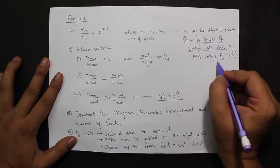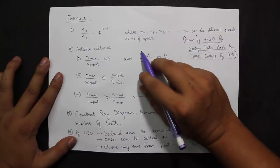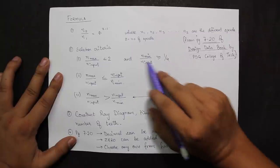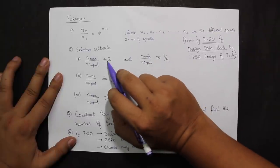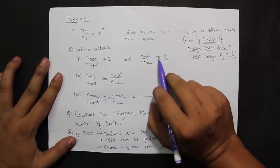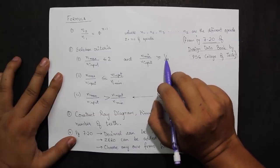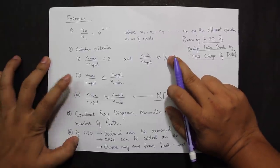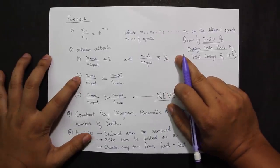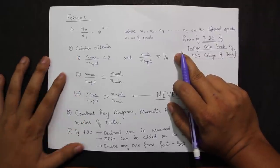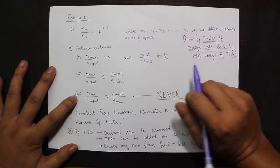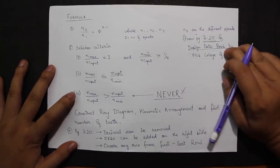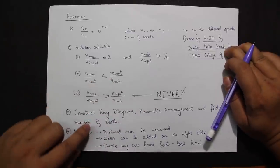The basic criteria for selecting the input speed at each stage are: maximum speed divided by input must be ≤ 2, and minimum speed divided by input must be ≥ 0.25. If Case 1 doesn't work we can use Case 2, but stick with Case 1 most of the time. Case 3 is never to be used.